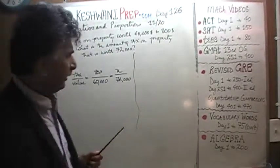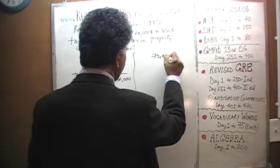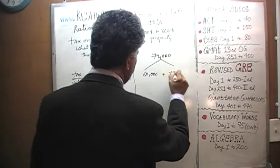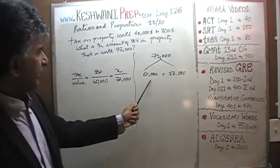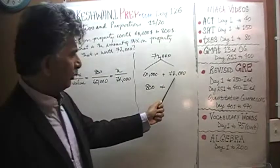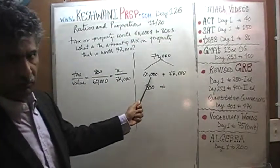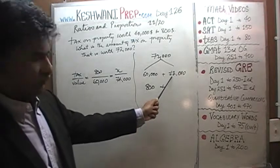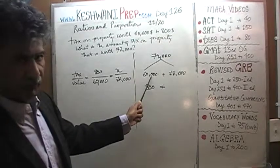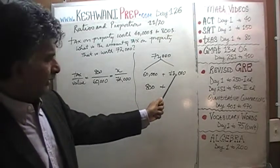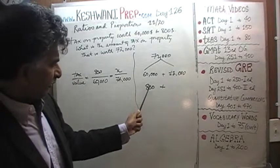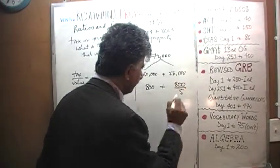Another way we can go about it is simply to realize the $72,000 that we are looking at is simply equal to $60,000 plus $12,000. But we already know what the tax is on $60,000, which is $800. And the tax on $12,000—$12,000 is a fifth of $60,000. If $12,000 is a fifth of $60,000, then it stands to reason that the tax on $12,000 should be the fifth of the amount of the tax on $60,000. So on $12,000 the tax is going to be the fifth of $800.